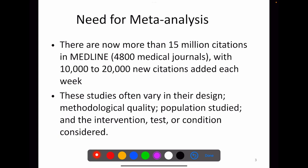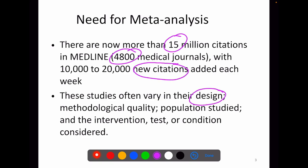What is the need for meta-analysis? There are now more than 15 million citations present in Medline alone, with 4,800 medical journals indexed in Medline, with 10 to 20,000 new citations added every week. All these studies differ in their design, methodological quality, population, intervention, the test which they are using, and conditions they are applying. As the number of published studies has dramatically increased, life is busy and clinicians are unable to read all articles published in their topic of research interest.